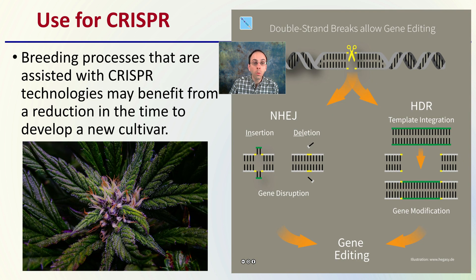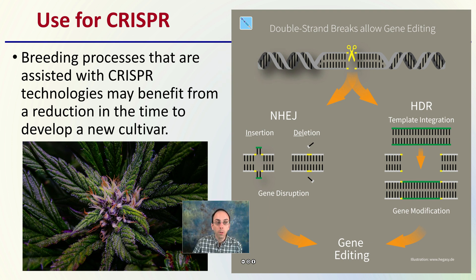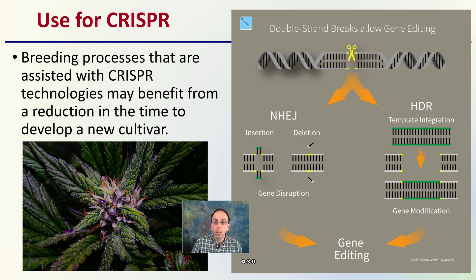So what's the use for CRISPR? When we're looking at breeding processes assisted with CRISPR, technologies may benefit from the reduction in the time to develop a new cultivar. It's a really great targeted method for gene editing, and as a result this can allow for quicker development of a cultivar instead of through traditional breeding.